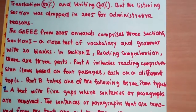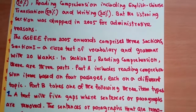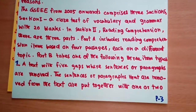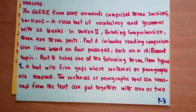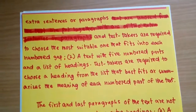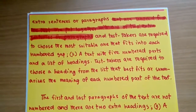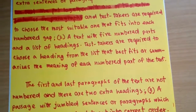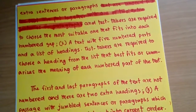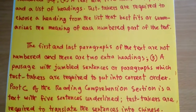Part B takes one of three item types: one, a text with five gaps where sentences or paragraphs are removed and test-takers choose the most suitable one for each gap; two, a text with five numbered parts and a list of headings where test-takers choose the heading that best fits or summarizes each numbered part — the first and last paragraphs are not numbered, and there are two extra headings.